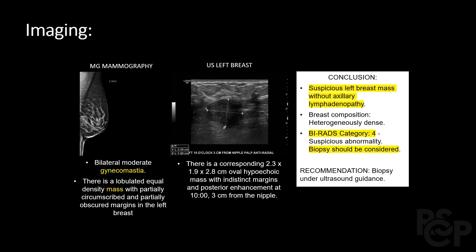Let's jump directly into imaging and look first at the mammogram. You can see just some moderate gynecomastia — the density of this tissue — and also, right in there, this lobulated equal-density mass with partially circumscribed and partially obscured margins.